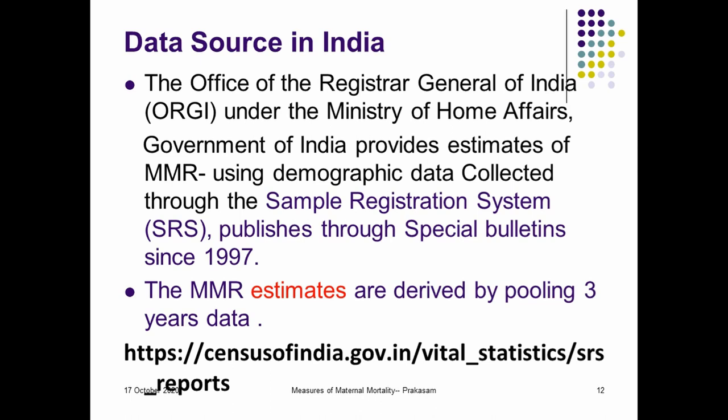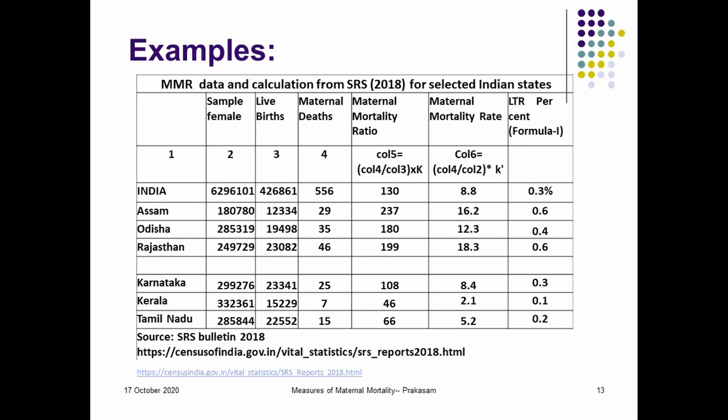The Sample Registration System (SRS) is collecting maternal mortality data through the vital registration system in India. Since it is collected on a sample basis, not covering the entire India, estimates are derived by pooling three years of data, published in SRS special bulletins started since 1997 on maternal mortality. For calculation of maternal mortality rates, ratios, and lifetime risk, you require the total number of women, live births, and maternal deaths.